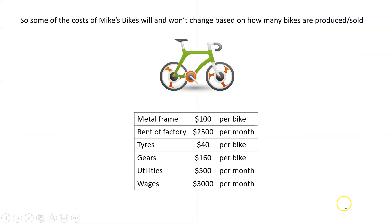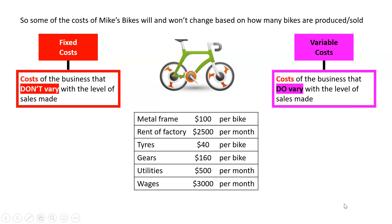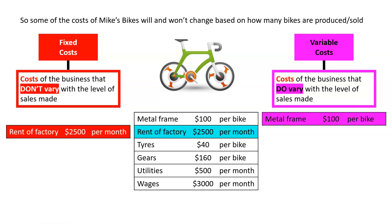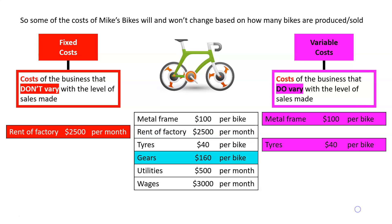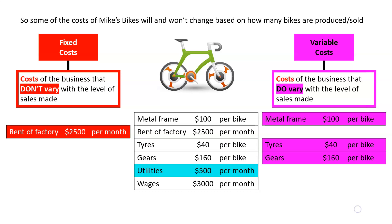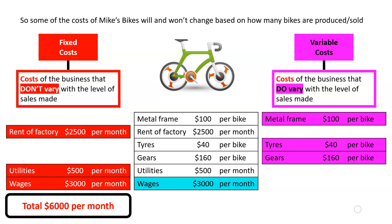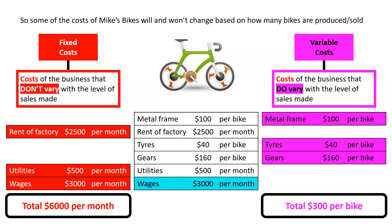Based on that, we can break the costs of this business into two groups: fixed costs and variable costs. The metal frame at $100 per bike is a variable cost. The rent is a flat fee per month, so it won't vary based on how many units we produce or sell — that's a fixed cost. The tires at $40 per bike are a variable cost. The gears at $160 per bike are a variable cost. The utilities are per month, so they won't change no matter how many bikes we make — fixed cost. And lastly, wages of $3,000 — that's a flat salary each month, so that's also a fixed cost. The total fixed cost per month is $6,000, and the variable costs are $300 per bike, going up and down based on how many bikes we produce and sell.